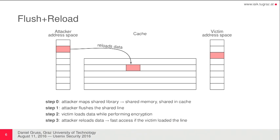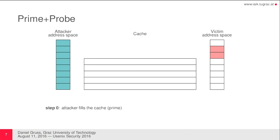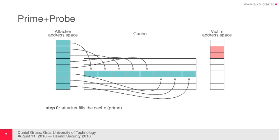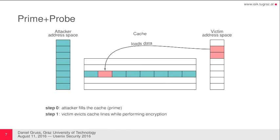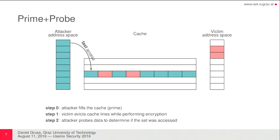This has a granularity of 64 bytes and you can do this at really high resolution — monitoring what the victim process does on a 64-byte granularity at high frequency. The Prime and Probe attack works differently: it does not require shared memory. Instead, you fill an entire cache set, then have the victim do some computation, replacing cache lines in that cache set. If the attacker then tries to reaccess its own memory locations, a slow access reveals that the victim has done some specific operation on addresses congruent to that cache set.